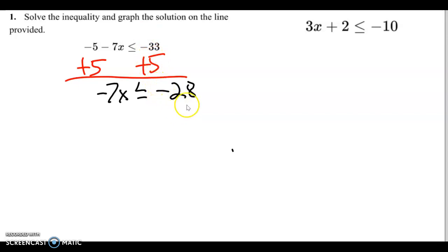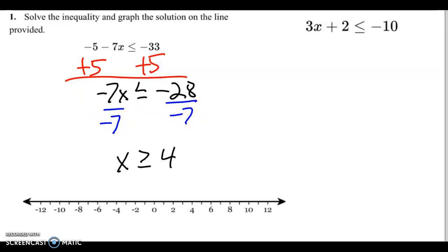33 minus 5 is 28. The 33 is bigger, leave it negative. Bring down the negative 7x. And now we're going to divide by negative 7. And when we divide by that negative 7, keep in mind, see how we had the less than or equal to? We have to swap it around to make it greater than or equal to because we're dividing by a negative.